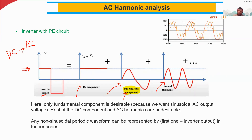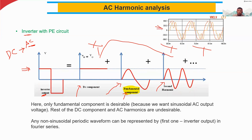Since we want AC at the output, the fundamental component is the desired one. All other components are unwanted. Because of these harmonics, the AC signal looks like a square wave, but in practical circuits it is not exactly that — practical circuits have distortions and harmonics.